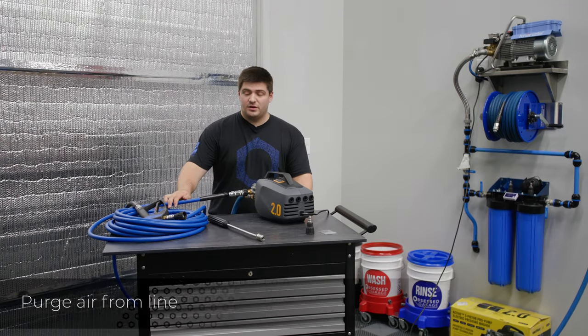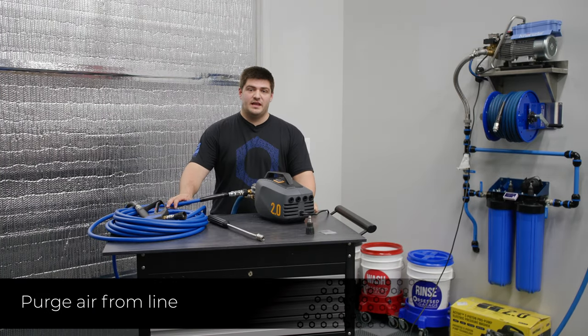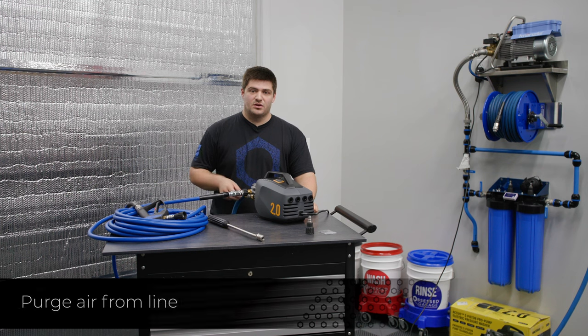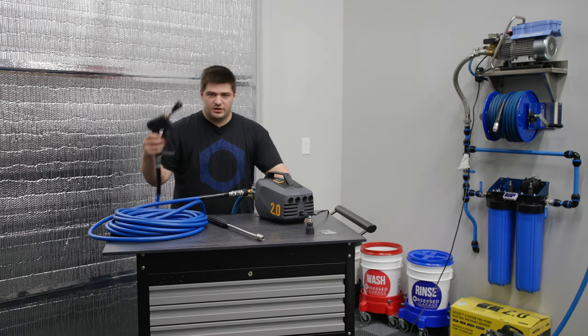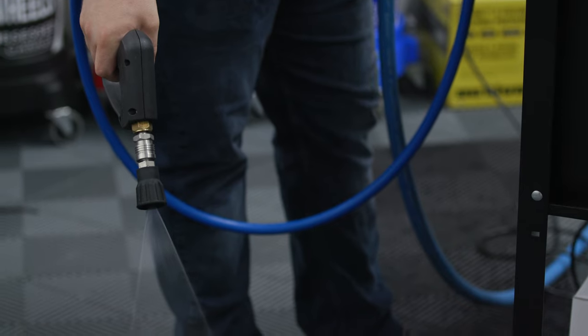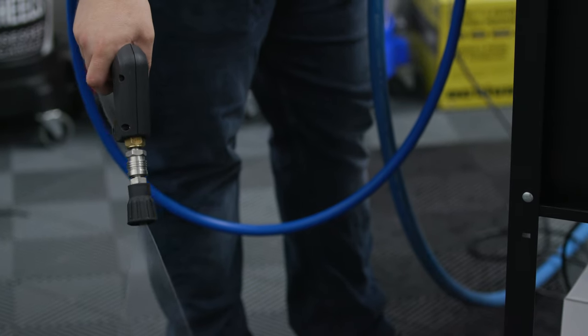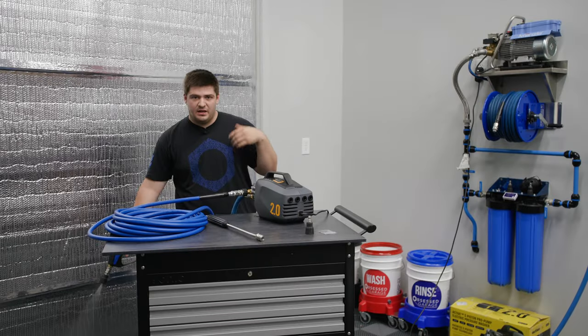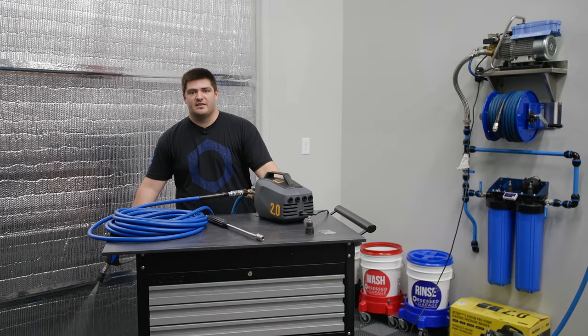Now before we turn the unit on, it's always a good idea to purge all of the air out of your air hose and garden hose as well. So all we're going to do is take the gun, pull the trigger, and purge the air out. Once you're not hearing any more popping or any spurts of air just like that, you'll know that your hose is free and clear of air.